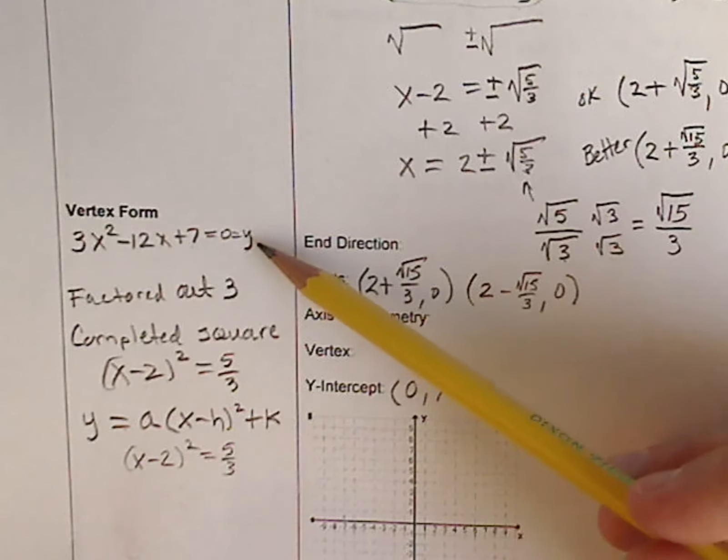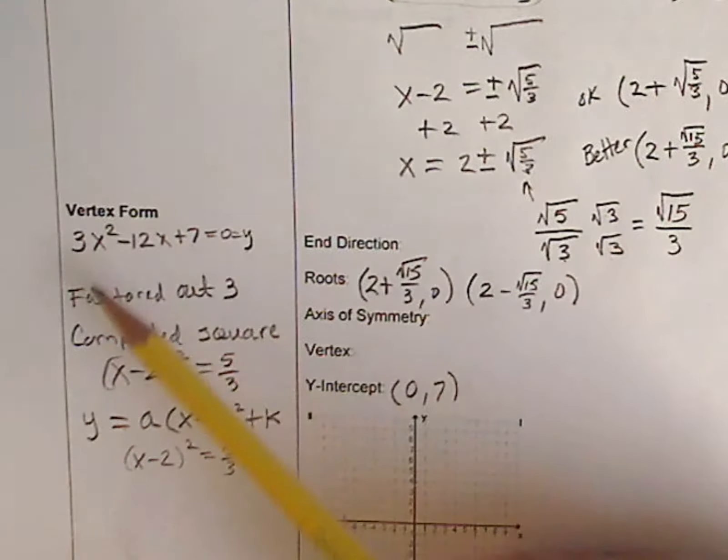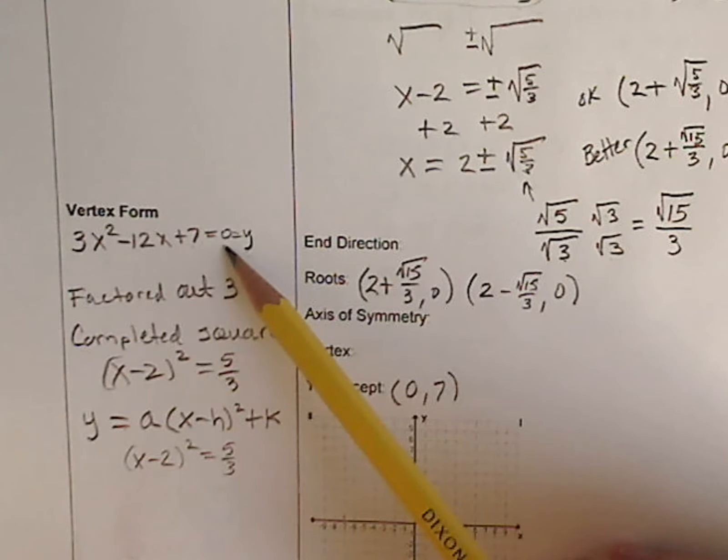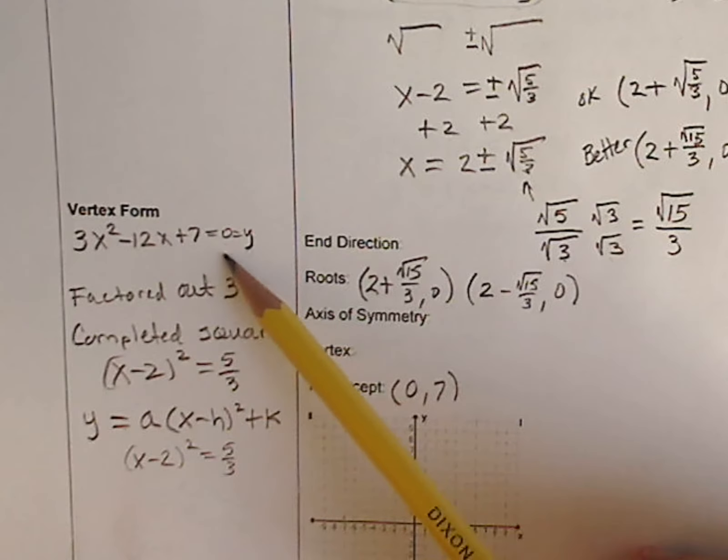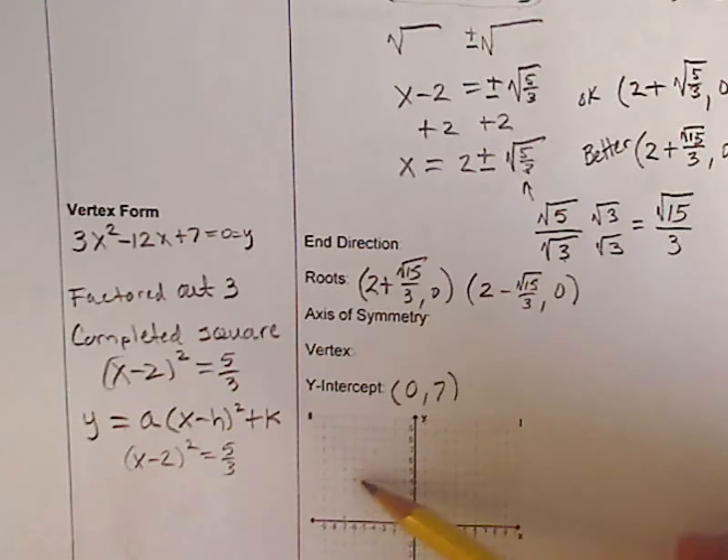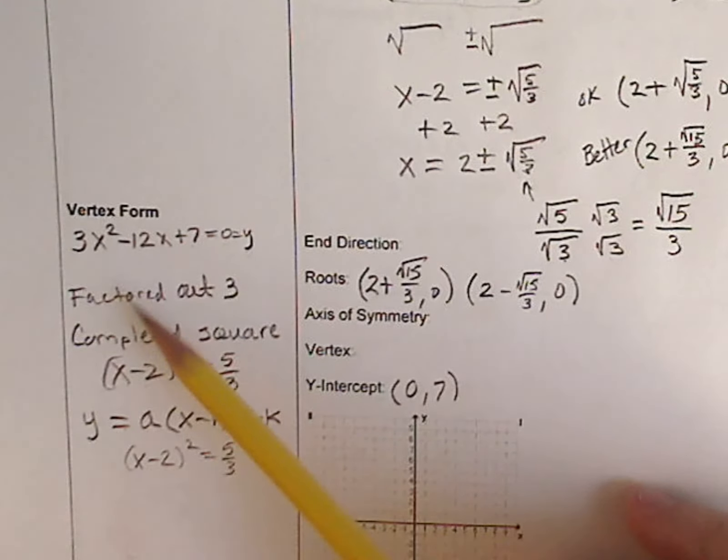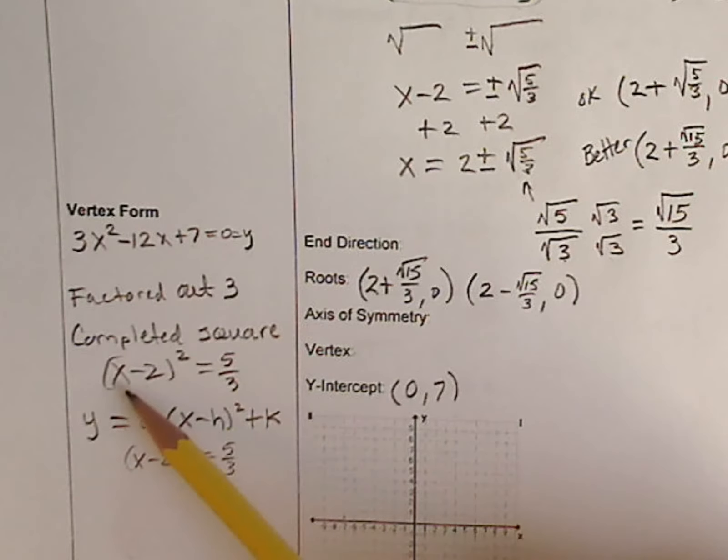To recap the first two videos, we started with this standard form equation, 3x squared minus 12x plus 7 is equal to 0. Remember, we set it to 0 because y will be 0 when it goes to the x-intercepts, or if they're imaginary, the two imaginary roots. We had factored out the 3, we had completed the square, where it was x minus 2 squared equaling 5 thirds.